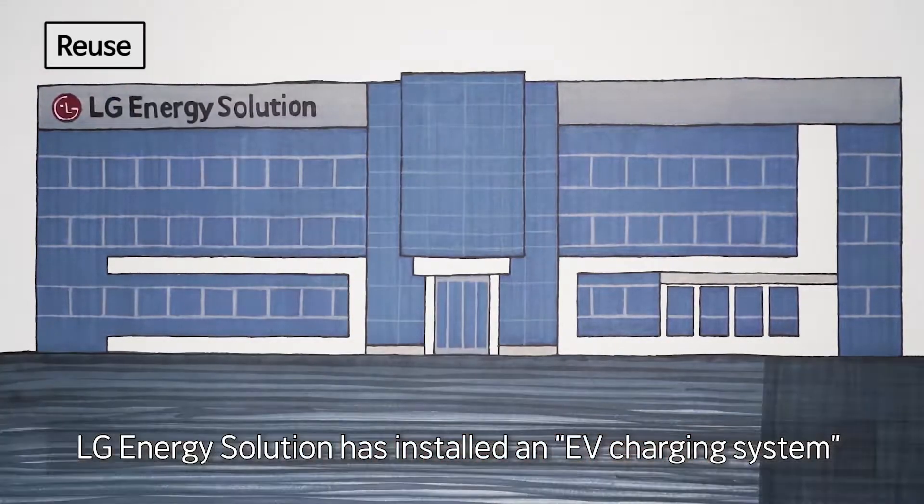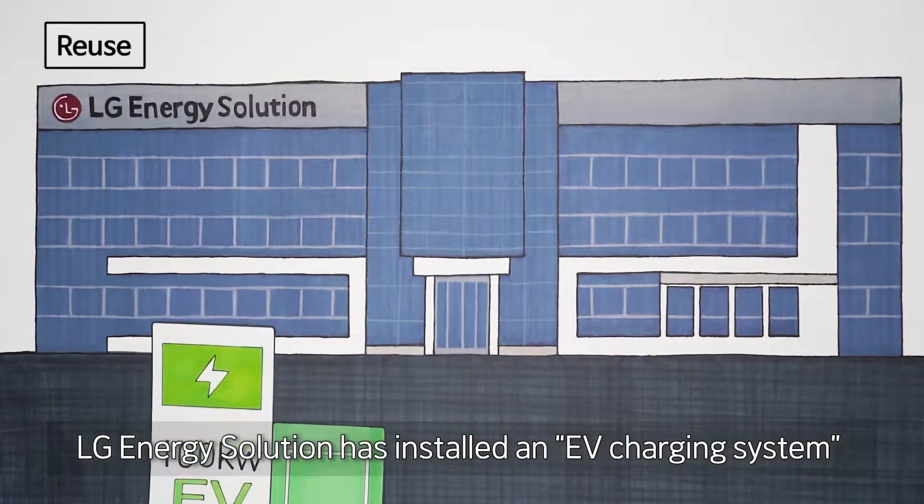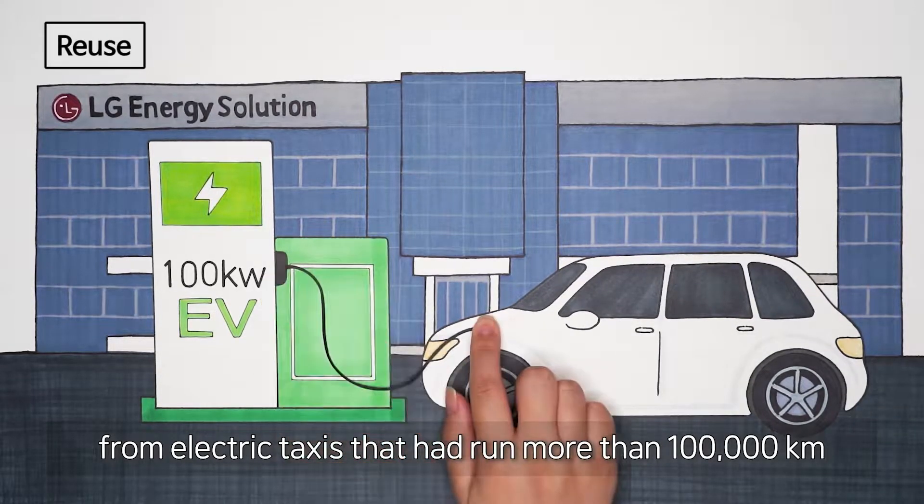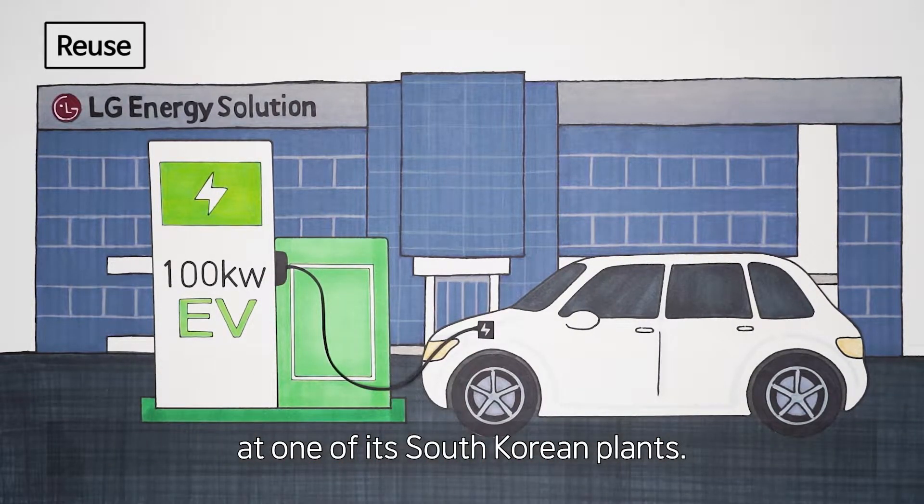LG Energy Solution has installed an EV charging system developed with used batteries from electric taxis that had run more than 100,000 kilometers at one of its South Korean plants.